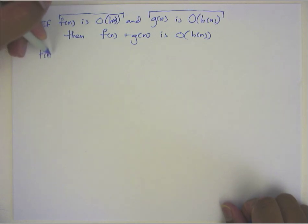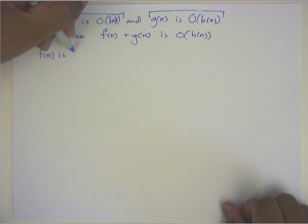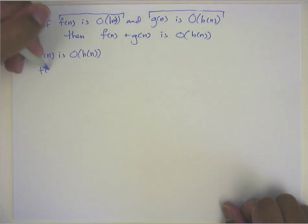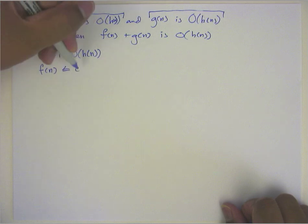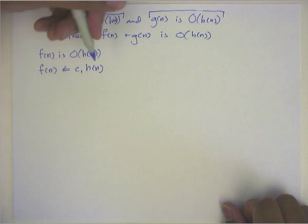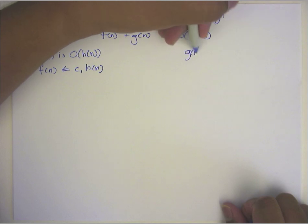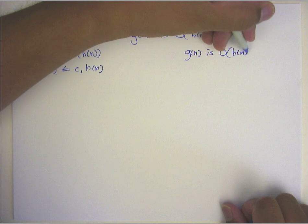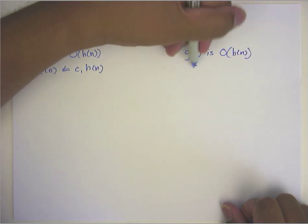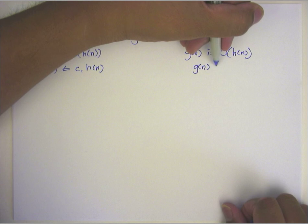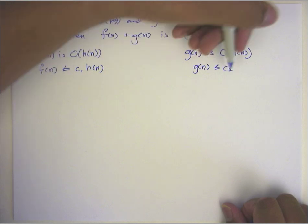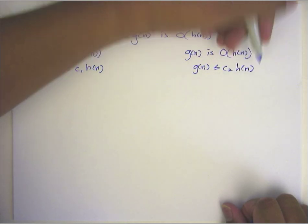So f(n) is big O h(n) means that f(n) is less than or equal to c1 times h(n). And I'm going to do the same thing on the other side here. g(n) is big O h(n) means that g(n) is less than or equal to c2 times h(n).